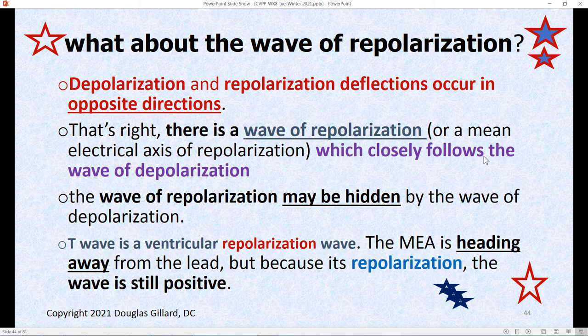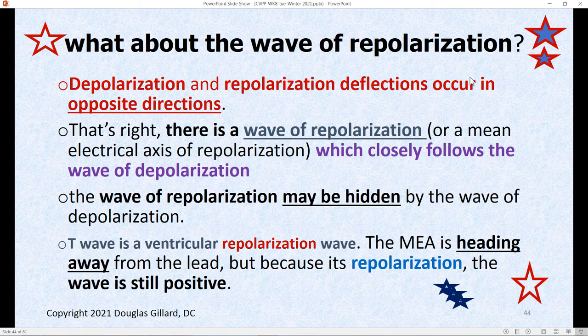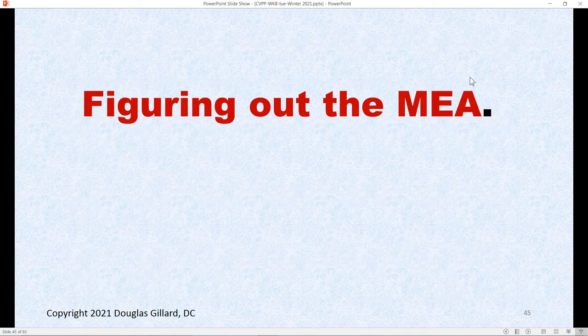What about the wave of repolarization? Ventricular repolarization is the T wave. The QRS complex is mainly ventricular depolarization, the T wave is ventricular repolarization, and the P wave is atrial depolarization. The atrial repolarization is hidden within the QRS complex — you don't actually see that one. Importantly, repolarization waves are always the opposite of everything I just taught you — everything is backwards. That's not going to really affect what we're doing today.